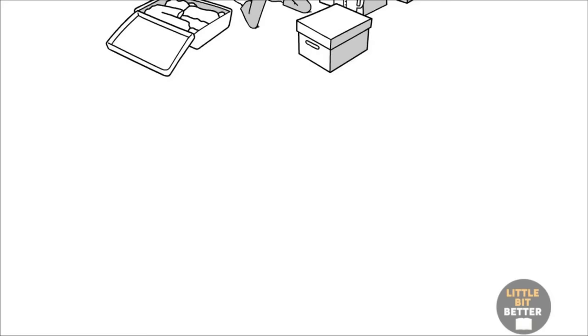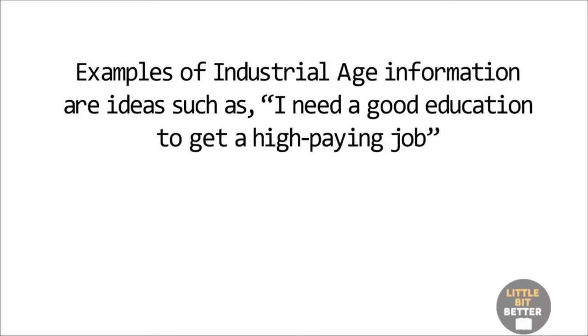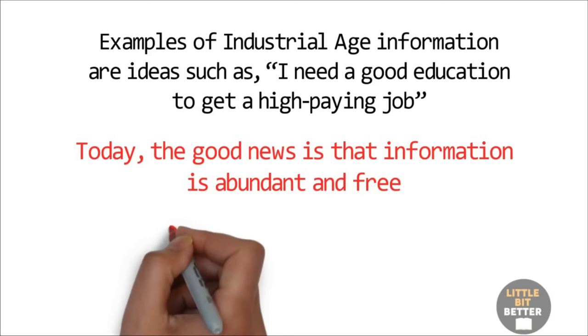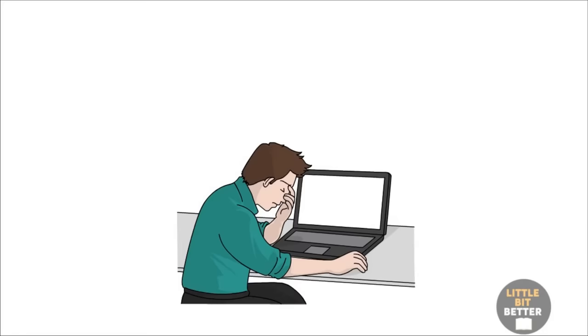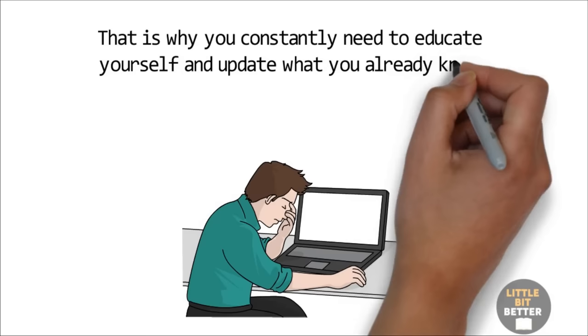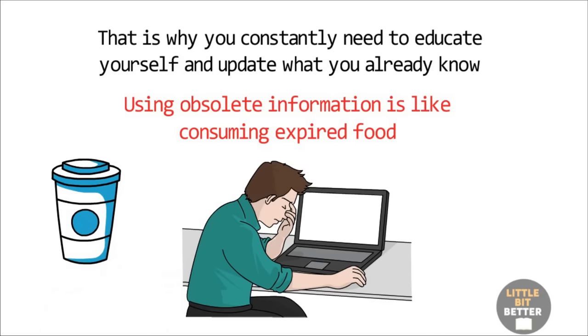Examples of industrial age information are ideas such as I need a good education to get a high-paying job. Today, the good news is that information is abundant and free. The bad news is that information is abundant and free. The amount of information doubles every 18 months. What you learn today might be obsolete in 18 months. That is why you constantly need to educate yourself and update what you already know. Using obsolete information is like consuming expired food. Many of us double-check the expiration date on the yogurt we buy, but we rarely check our brains to see if the knowledge has expired or not.